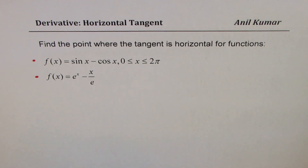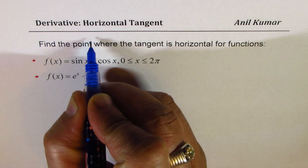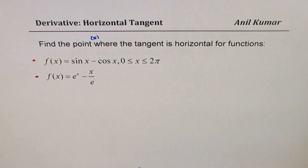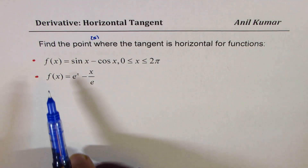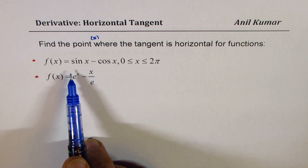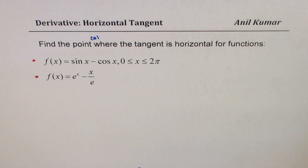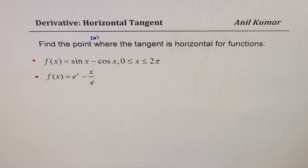There could be more than one point, so let me write 'points' here. We are looking at two functions. The first one is f(x) = sin x − cos x, where x is between 0 and 2π. The second one is f(x) = e^x − x/e.